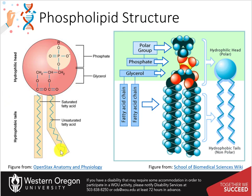Unsaturated fatty acids result in kinks in the hydrophobic tails. This moderates the melting temperature of the lipid bilayer and creates a structure that allows fluid movement of molecules laterally through the lipid bilayer.